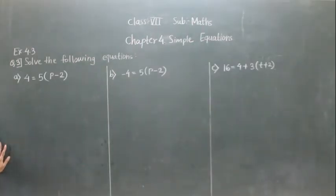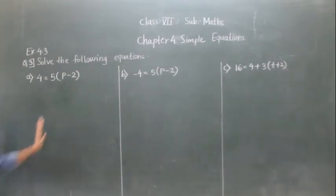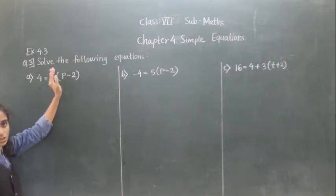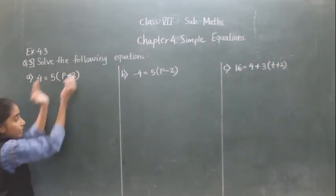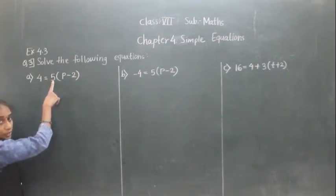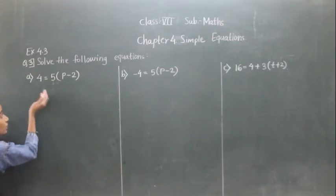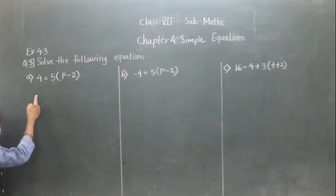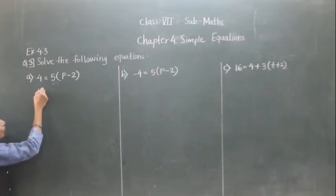Let's solve question number 3. Solve the following equation. We are not going to touch the variable first. 5 is here as multiplication. If it comes to the left hand side, it will become division. So we get 4 upon 5 on the left hand side, and P minus 2 remains on the right hand side.